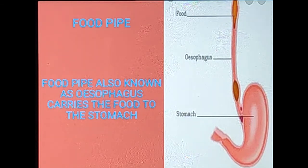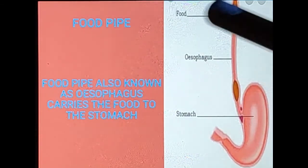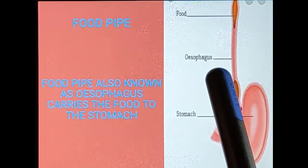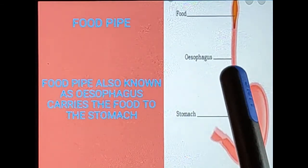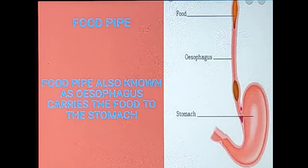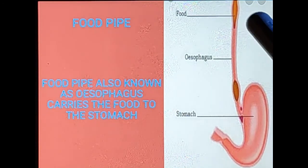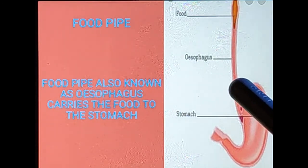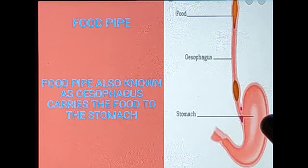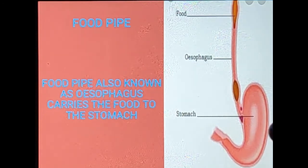The food pipe is also known as esophagus. The main function of the food pipe is that the swallowed food slips down through it — food goes from here through the esophagus, slips down, and reaches the stomach. So the main function of the food pipe is to carry food from the mouth to the stomach.